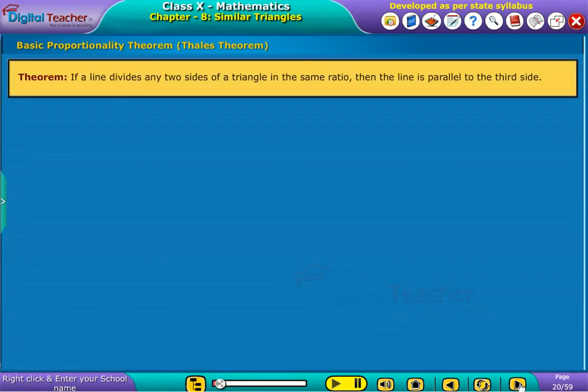Theorem states that if a line divides any two sides of a triangle in the same ratio, then the line is parallel to the third side.